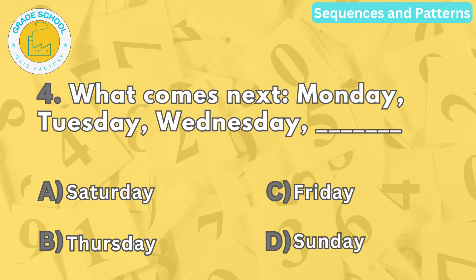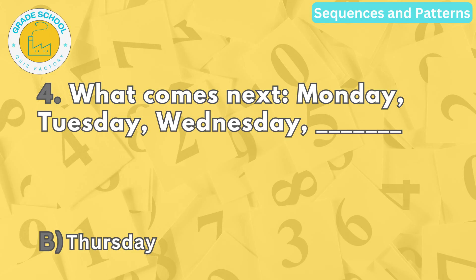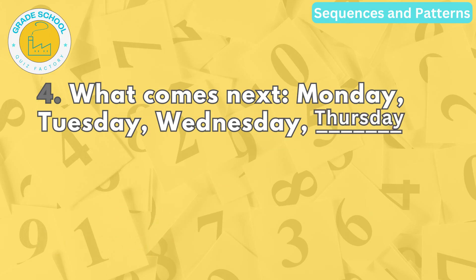Question number four. What comes next? Monday, Tuesday, Wednesday, blank. The correct answer is letter B. Thursday. The sequence follows the days of the week in order.